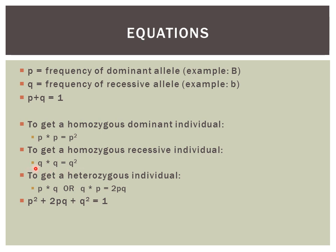Same thing for the recessive individual — to get one recessive allele, that's Q, and another recessive allele is also Q, so multiplied together gives Q squared. To get a heterozygous individual, there are two ways: you can first get a P then a Q, or a Q then a P. That gives you 2PQ. Those three possibilities add together to equal one, because if you add the frequency of homozygous dominant, heterozygous, and homozygous recessive, you get the entire population — one hundred percent, or one.